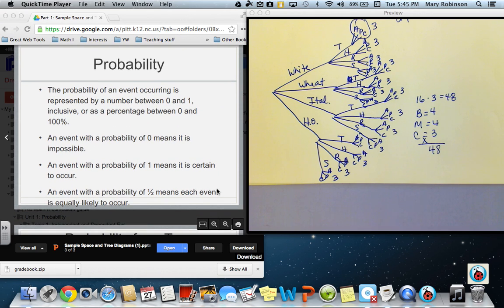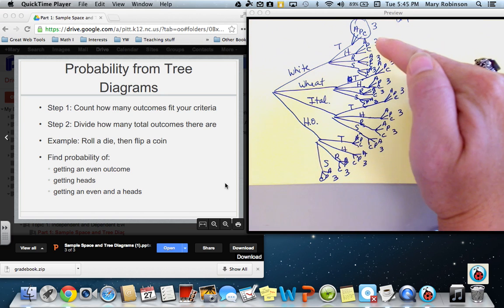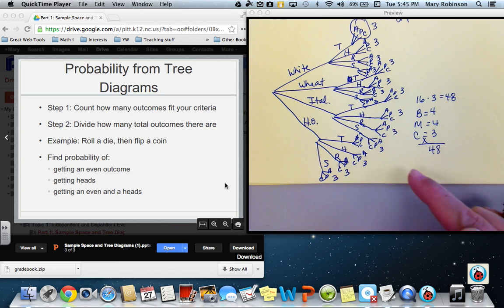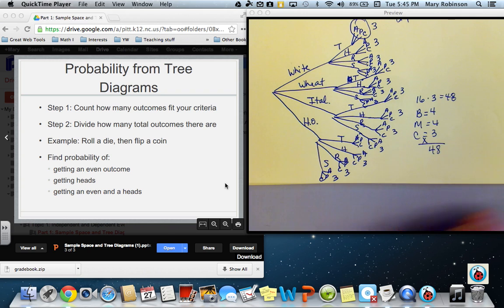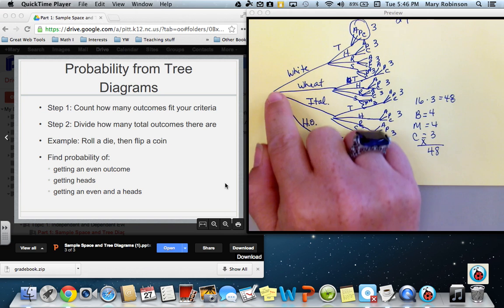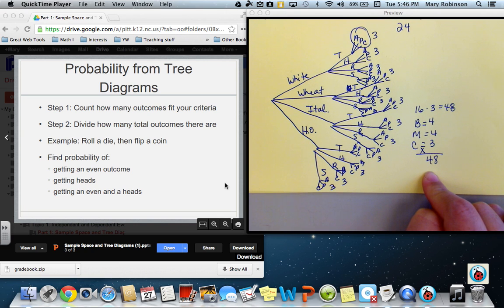If we want to find the probability of an event, the probability of an event occurring is represented by a number between 0 and 1 inclusive, meaning it can equal 0 and it can include 1 as well. To find the probability from a tree diagram, we first want to count how many outcomes fit our criteria. For example, in the last one we just did with the Subway sandwiches, there were 48 possible outcomes. So using our tree diagram, that's all we do is count how many outcomes we had. The second step is to divide by the total outcomes. So the outcomes that fit your criteria divided by the total number of outcomes. In this case, if we were finding the probability of, say, a sandwich with white bread, we would take all the possible numbers of sandwiches with white bread and divide by 48, which is our total outcomes.